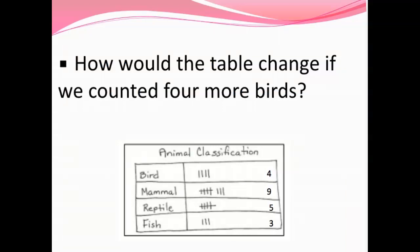How would the table change if we counted four more birds? I think the table would change because I would have to put a tally mark — I would have to slash number five and then add three more. So under the bird section of our table we would no longer have four but we would have eight.